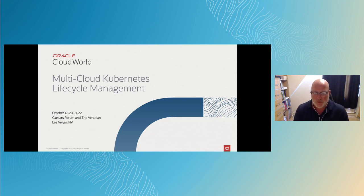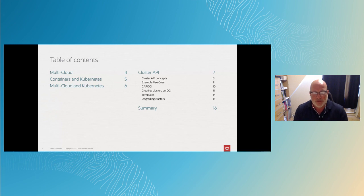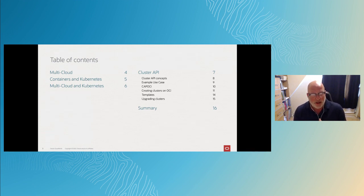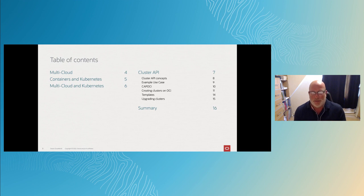Today we're going to talk about multi-cloud Kubernetes lifecycle management. We're going to cover a few subjects: some of the trends in the industries, multi-cloud being one of them, containers and Kubernetes being a very common way of running applications, and bringing these two together and discussing some of the challenges this brings, and then talking about a potential solution called Cluster API. We'll look at background concepts of Cluster API, why people might use it, an example use case, how we've implemented this on Oracle Cloud Infrastructure, creating clusters on OCI using Cluster API, using templates to make deploying clusters more consistent and to upgrade clusters. Then we'll take a recap of what we've covered.